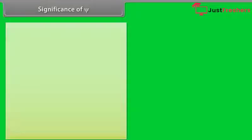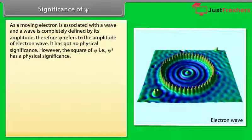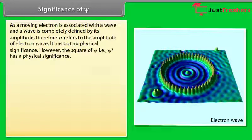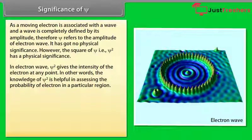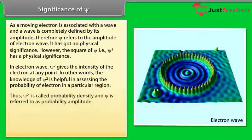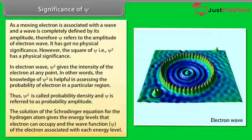Significance of Xi: As a moving electron is associated with a wave, and a wave is completely defined by its amplitude, Xi refers to the amplitude of the electron wave. It has no physical significance by itself. However, Xi squared has physical significance — in the electron wave, Xi² gives the intensity of the electron at any point. In other words, the knowledge of Xi² is helpful in assessing the probability of finding an electron in a particular region. Thus, Xi² is called probability density and Xi is referred to as probability amplitude. The solution of the Schrödinger Equation for the hydrogen atom gives the energy levels the electron can occupy and the wave function of the electron associated with each energy level.